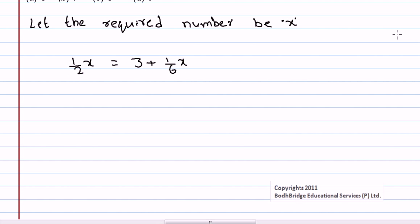Now we can find the value of x. That is x by 2 equals 3 plus x by 6. Bring x by 6 to the left side. So x by 2 minus x by 6 equals 3.